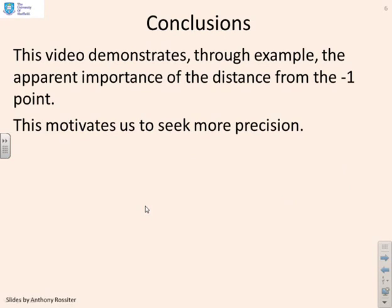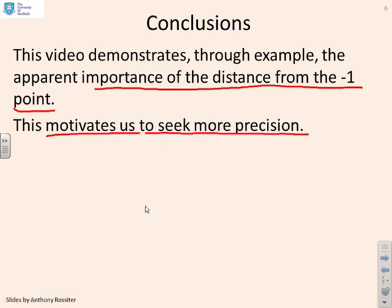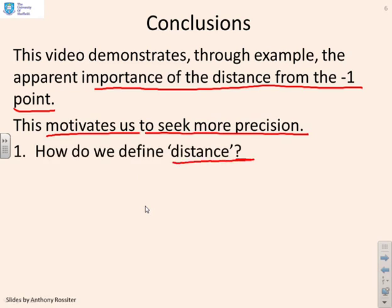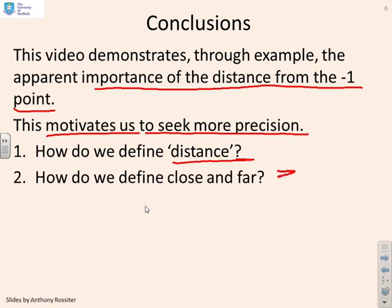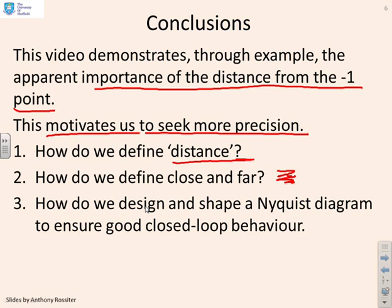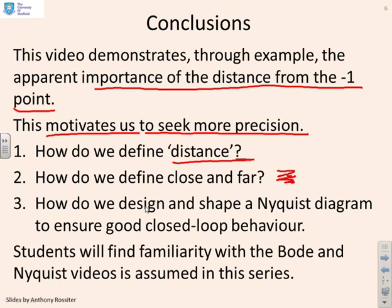In conclusion, this video demonstrates through example the apparent importance of the distance from the minus one point. What this should do is motivate us to look for more precision: how do we define distance from the minus one point in a meaningful fashion? How do we define close and far? What's a good distance to be, and what's a bad distance? And how do we design and shape a Nyquist diagram to ensure good closed-loop behaviour? Going forward, assuming students are familiar with the Bode and Nyquist videos, we'll tackle these three questions so we can use the concept of distance from minus one as a design tool to design compensators for optimal closed-loop behaviour.